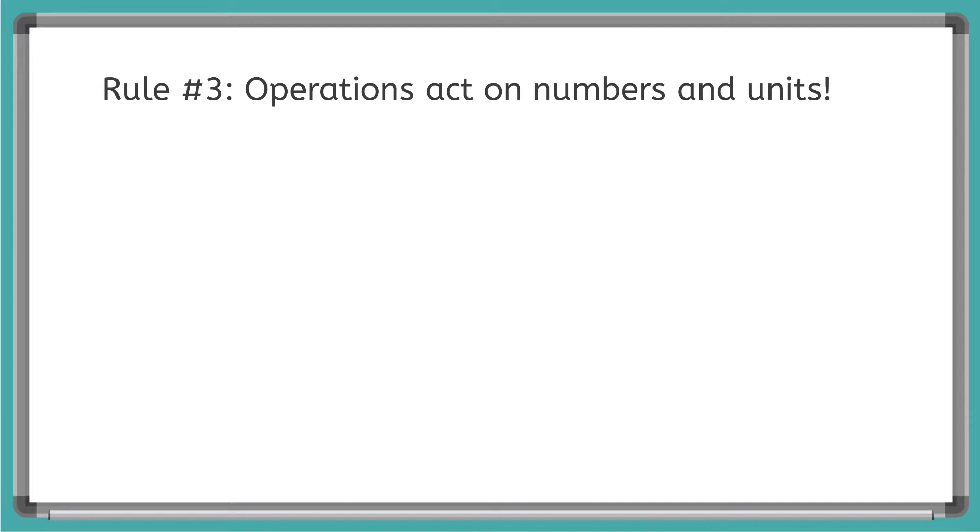Rule number three. Operations act on numbers and units. And this is super important and often forgotten. So we're going to use the equation for kinetic energy as our example. So remember, Ek is equal to one half mv squared. And let's solve for the kinetic energy. And just to make our lives easy, we're going to say that the mass is one kilogram and the velocity is one meter per second.